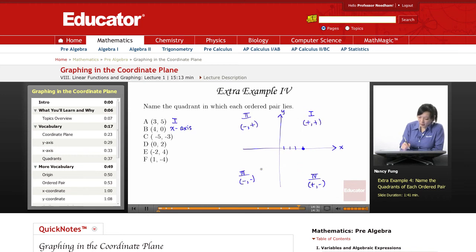Negative 5, negative 3. It's a negative and a negative, so that's quadrant 3. (0, 2) - that would be 0 and up 2. Notice that also does not lie in a quadrant, but lies on the y-axis.